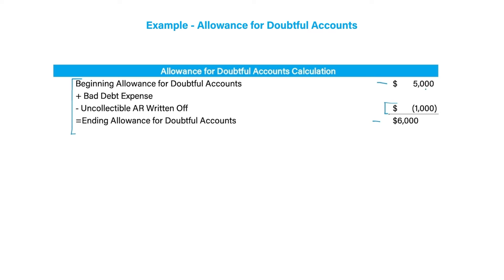We can solve for bad debt expense: it would be $2,000, because $5,000 plus $2,000 minus $1,000 equals $6,000. Make sure you're practicing solving for X when it comes to these types of questions.